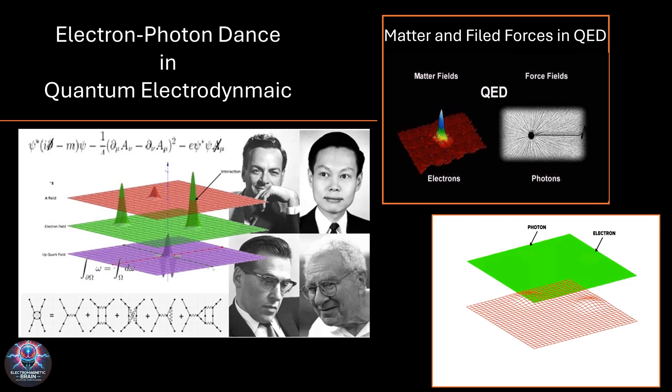Look at this colorful diagram in the center, it represents quantum fields in action. Each layer represents different quantum fields, such as the electron field and the up-quark field. The sharp spikes? Those are particles emerging from the quantum vacuum, constantly interacting in a dynamic exchange of energy and momentum. Now, let's turn to the top right image. This highlights how QED describes forces and matter fields. The electrons exist as localized disturbances in the quantum field, while photons mediate the interactions between them. You can see how force fields, represented by those lines, extend outward, showing the invisible yet powerful influence of electromagnetic forces.